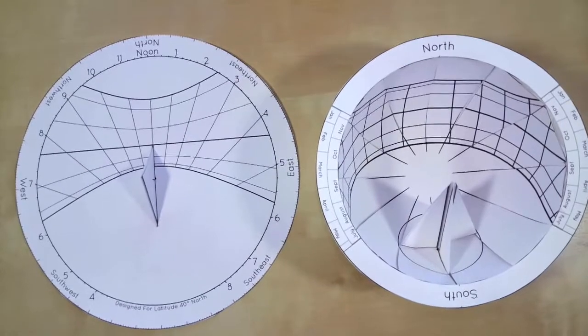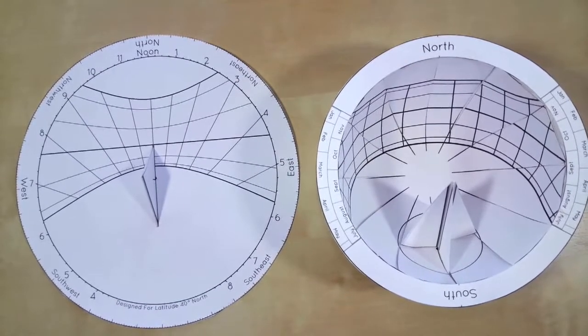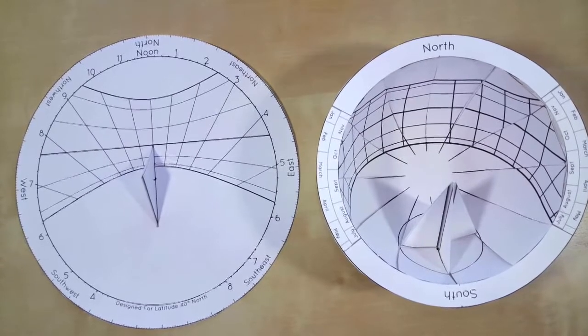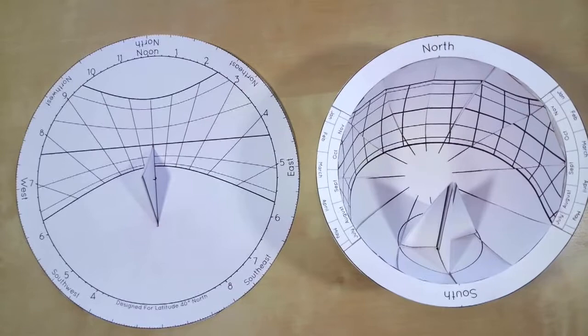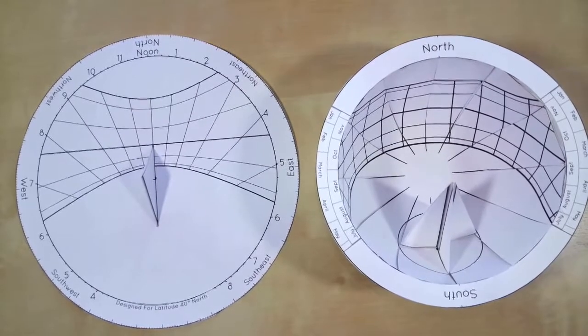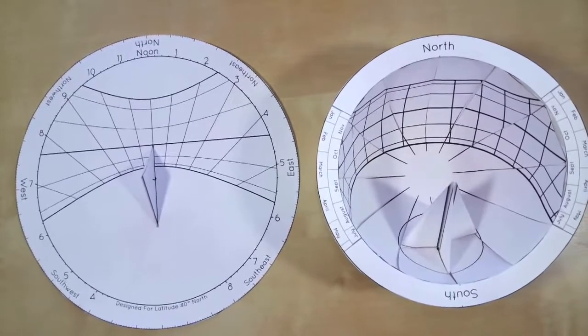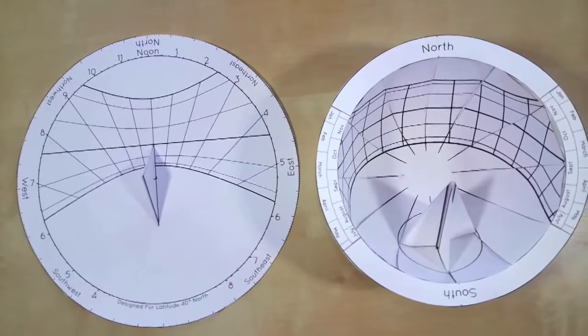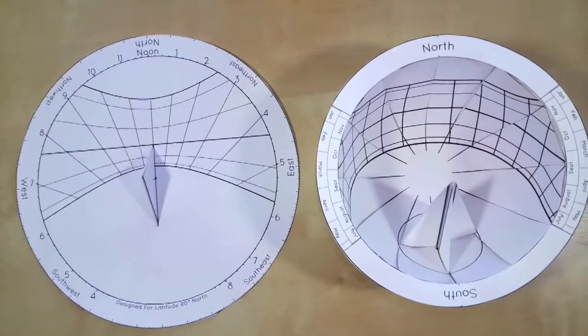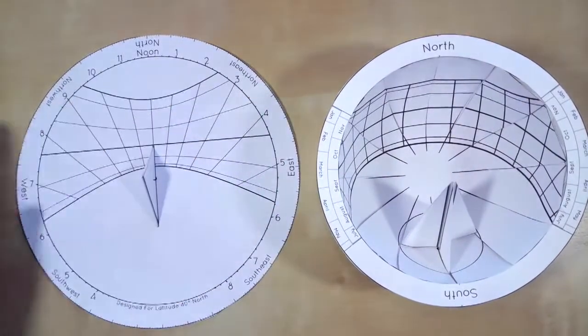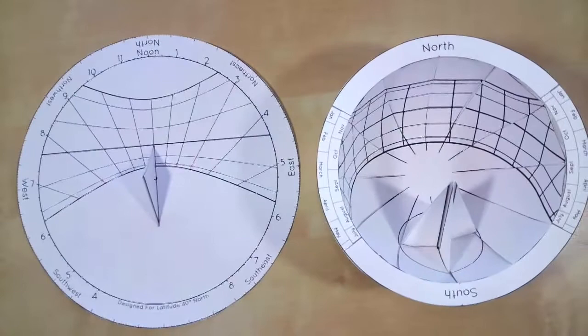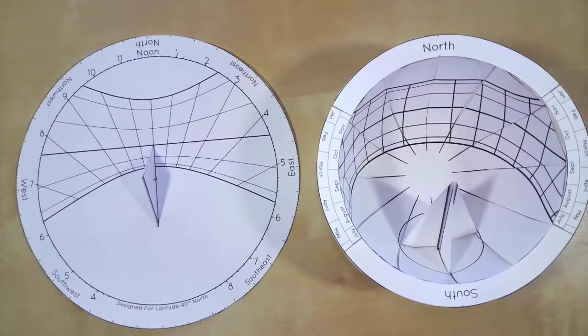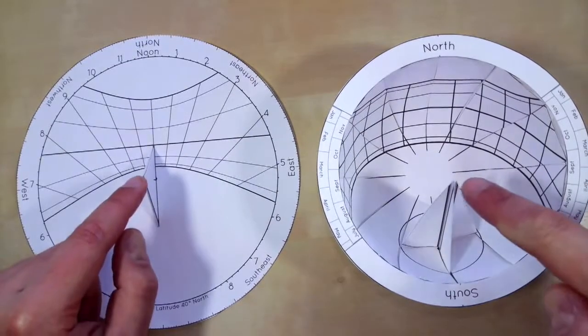So both of these paper sundials represent my own updated versions of classic ancient Greek stone-carved sun-tracking instruments. They're both essentially models of the sky. This hemispherical sundial is just an inverted model of the dome of the sky overhead. And this flat one is just what you get if you flatten this one. They both have this grid of markings on them. This represents the track or the trail or the highway of the sun across the sky.